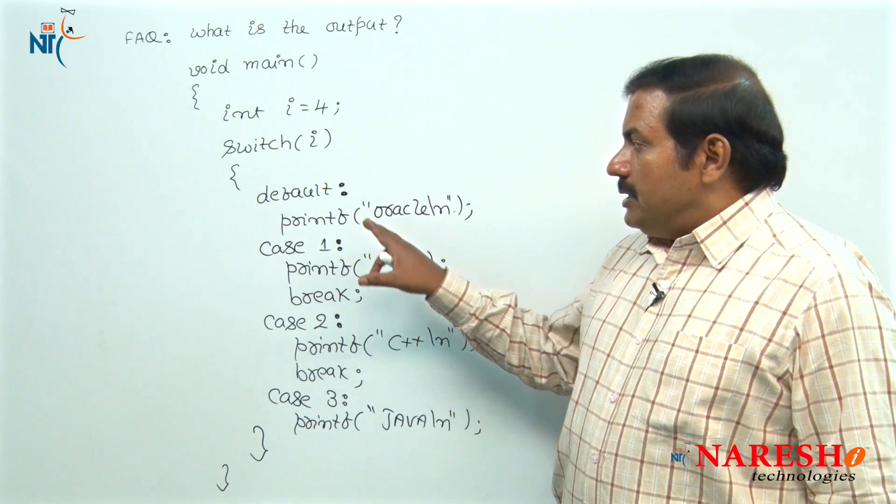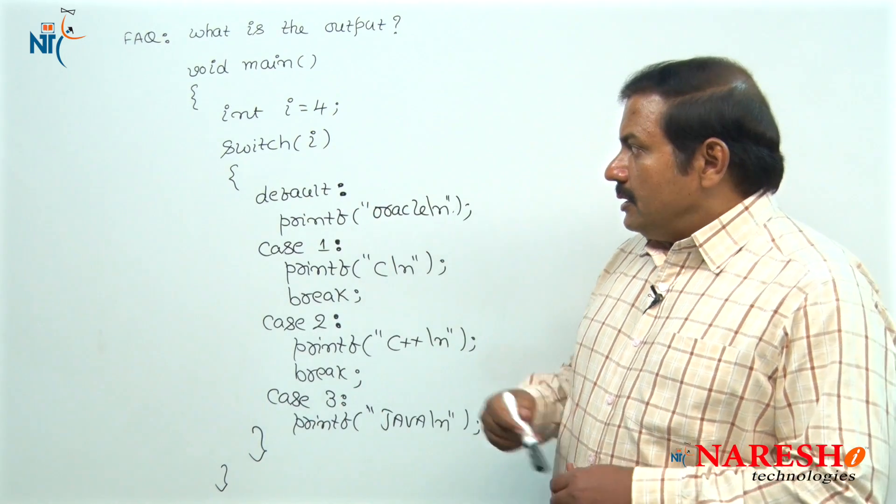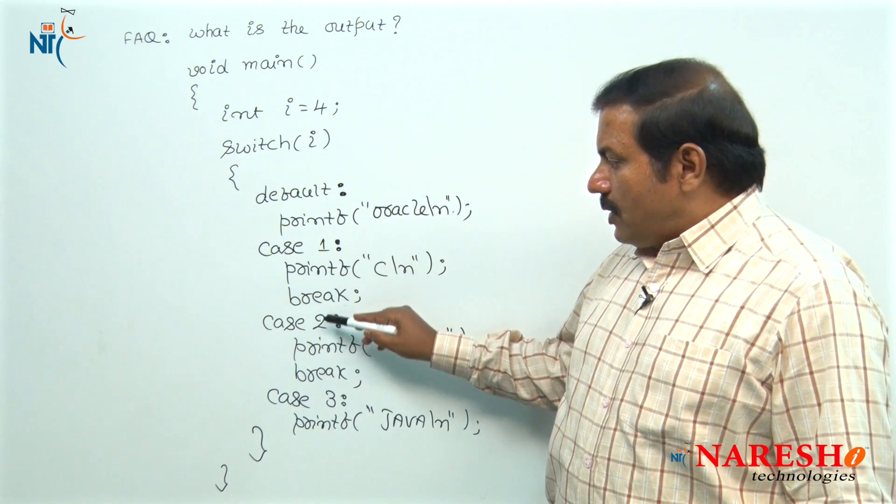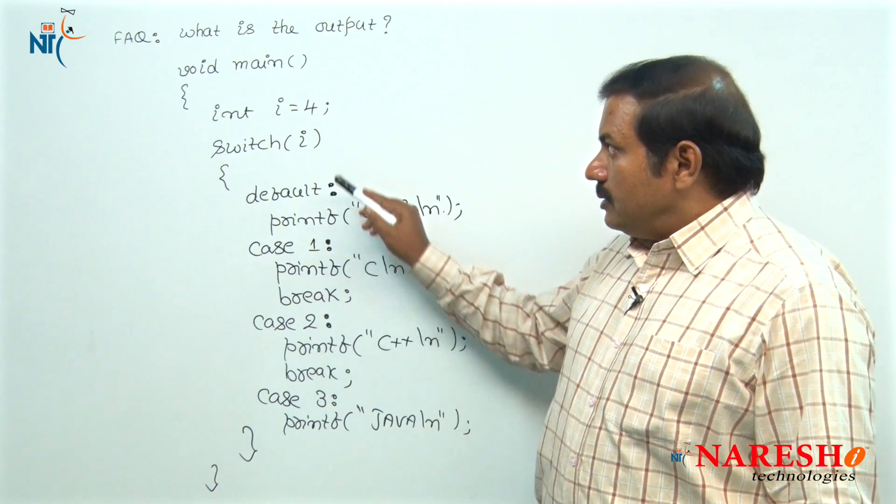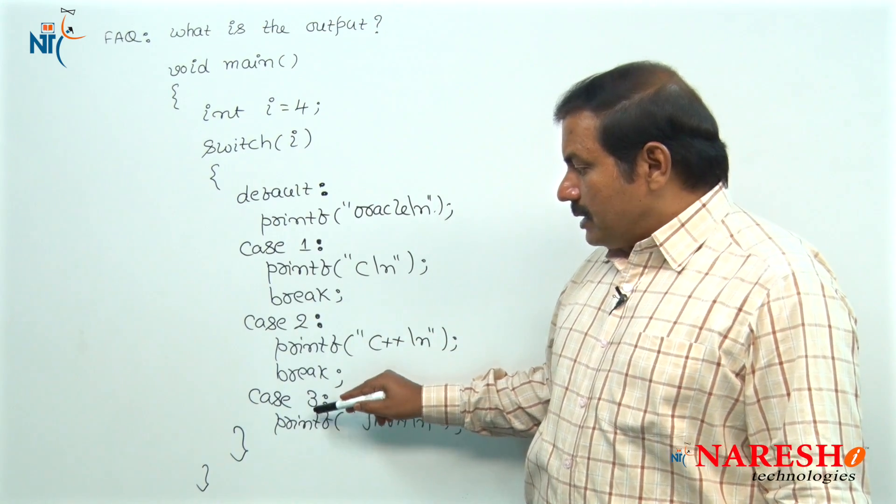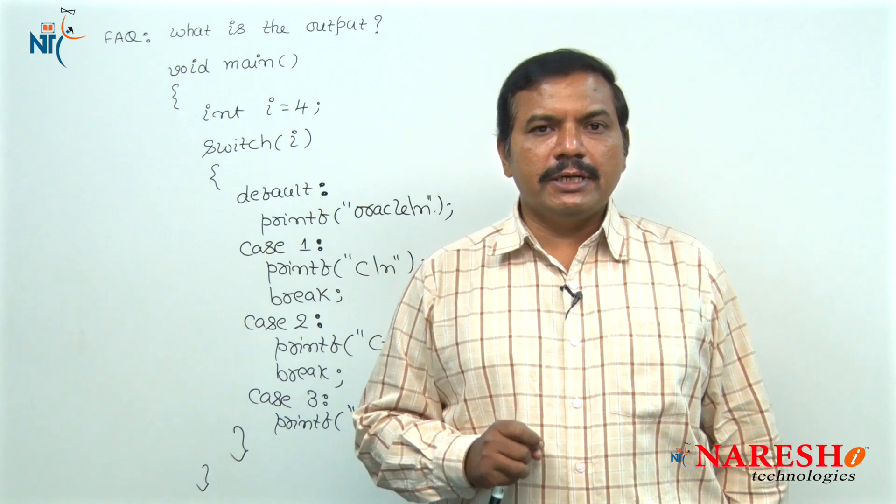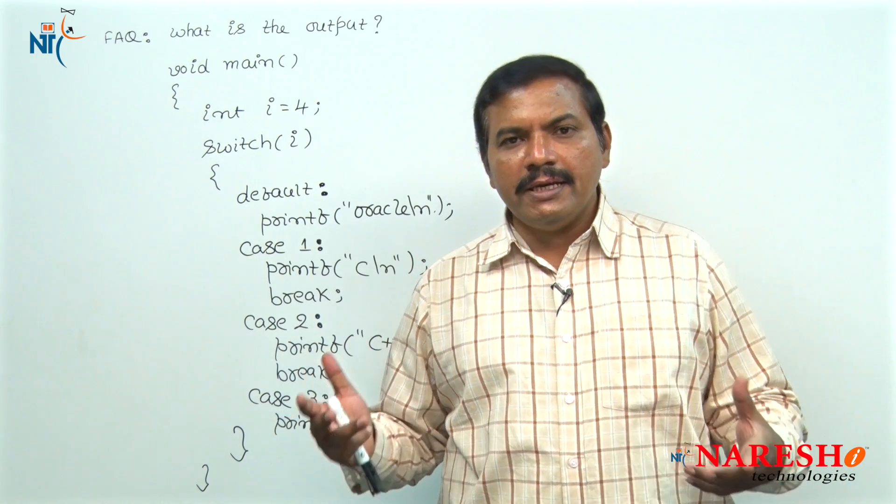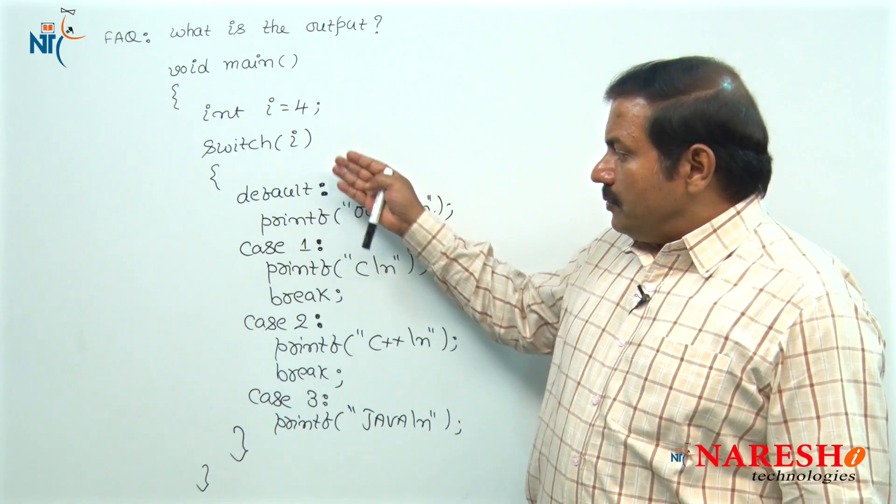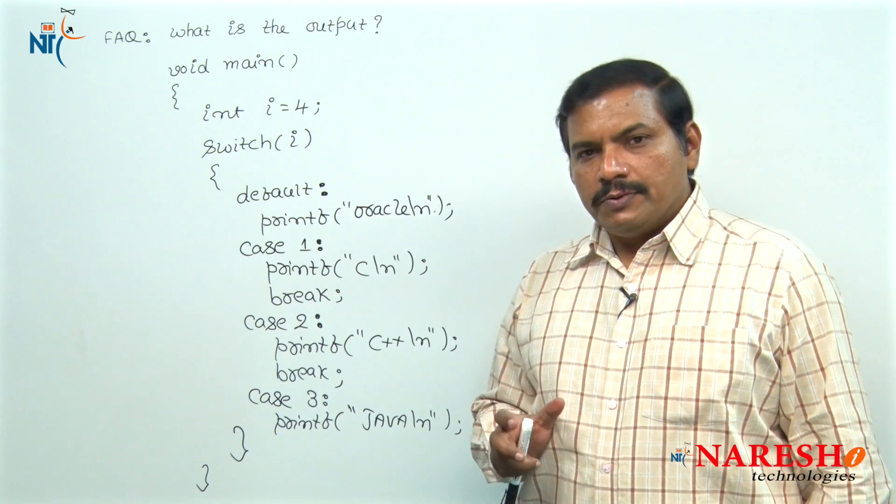Here the output: the value of switch case expression is i. The i value 4 is compared with the case constants. I value 4 is not found match with any of these case constants. Hence, the default case statements are executed. Even the default case is at any place inside this switch case, if the match is not found with any of the case constants, the default case statements are executed.